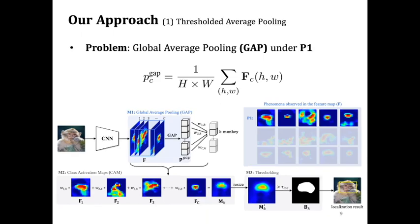P1 shows the area of activations largely vary by channel. However, global average pooling does not take into account the different activated area of each feature, as shown in the equation.